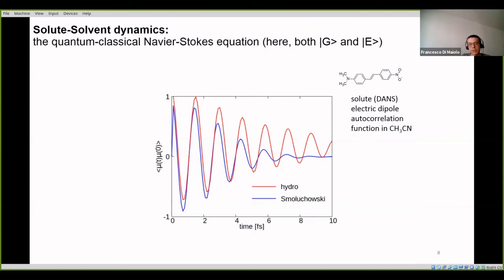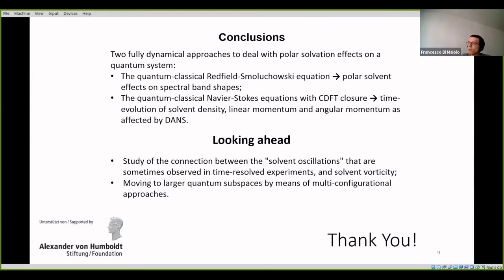So, concluding, I presented these two quantum classical approaches, both coming from the quantum classical Liouville equation, in order to deal with some dynamical environment that interacts with a quantum dynamical system. And in the future, we want to extend, of course, the quantum subsystem. The idea is to combine this kind of approach for the environment with MCTDH and multilayer MCTDH. And then, we want to study the connection between these vortexes that we see in the angular momentum and some inertial, ultra-fast effects that can be observed in some solvents in time-resolved experiments. Thank you.